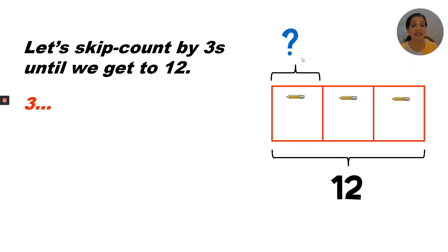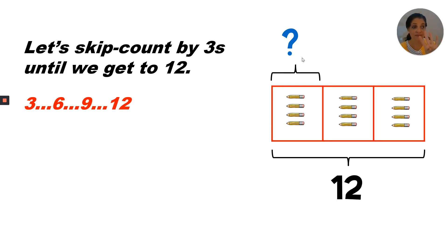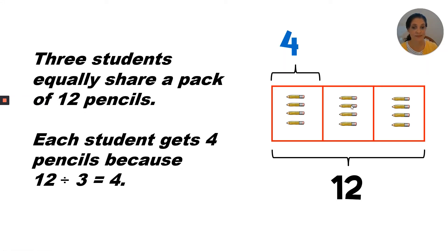Let's skip count by threes until we get to 12. Three, six, nine, twelve. We have four pencils in each box. So if three students equally share a pack of 12 pencils, each student gets four, because 12 divided by three equals four.